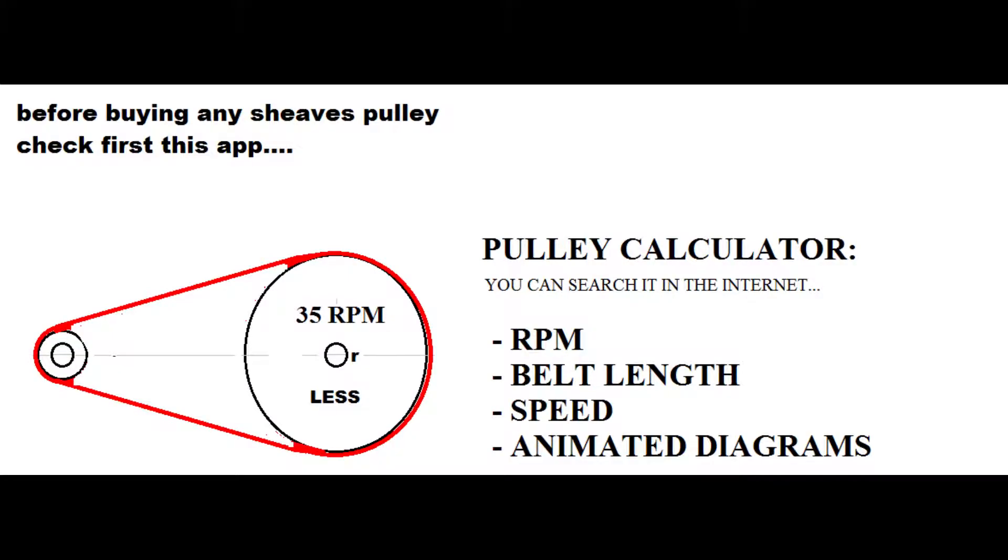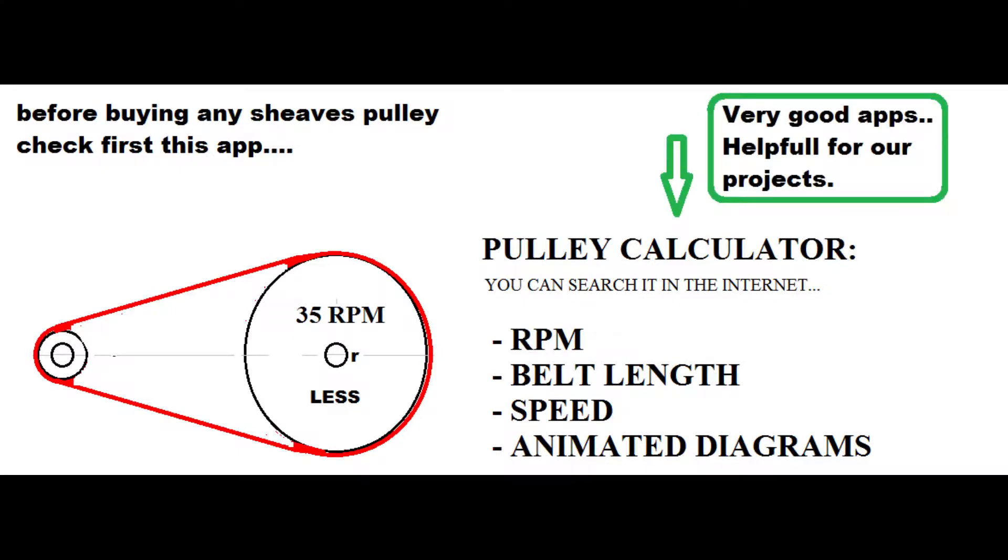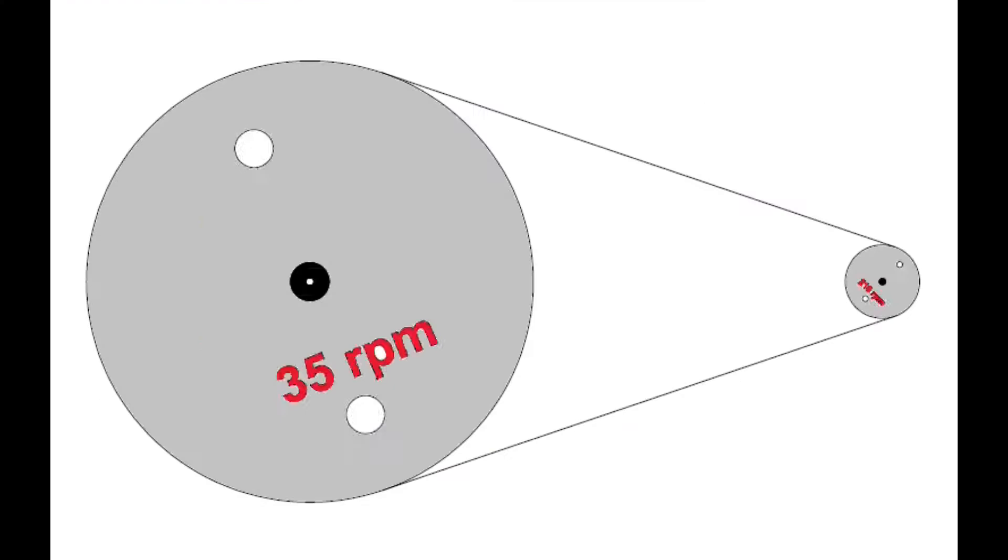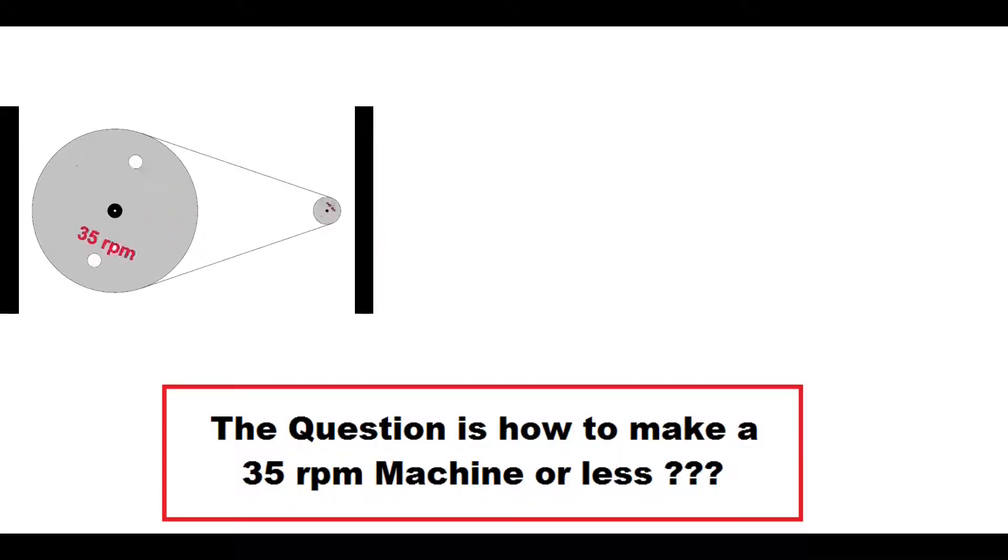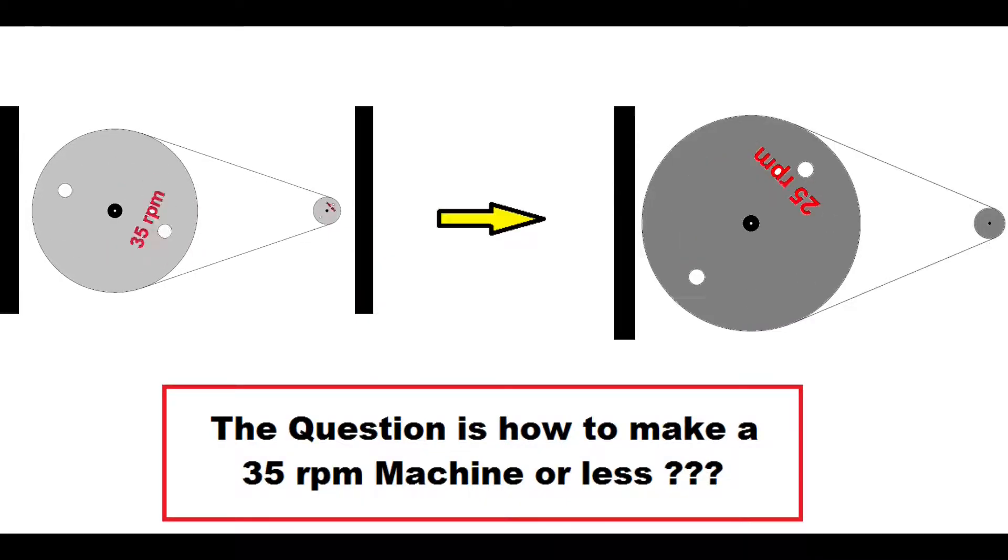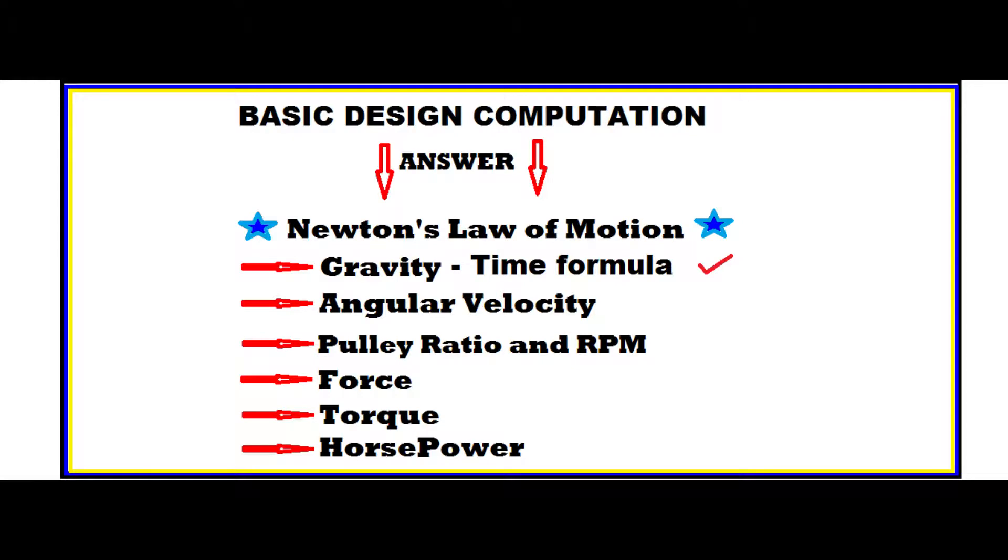Before buying any sheave pulley, check this app first: Pulley Calculator - a very good app which is helpful for a project. You just input the diameter of the sheave pulley, then it will animate or calculate the desired RPM. I planned to have a slower RPM, maybe 25, but with monetary constraint I settled with 35 RPM because the price of the large diameter sheave pulley is high.